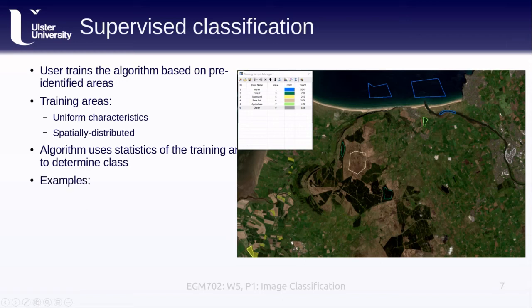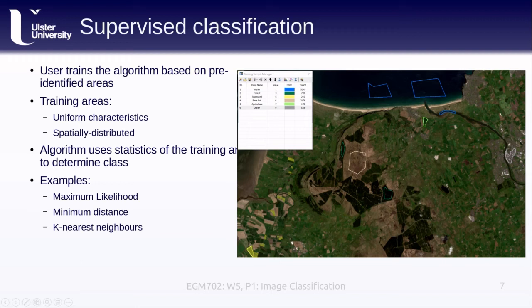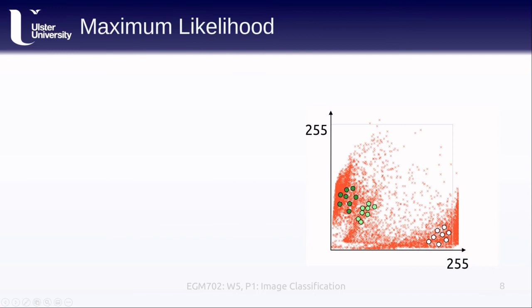Some different algorithm examples include maximum likelihood, as used in EGM 713; minimum distance, which calculates the geometric center of each class based on the training data — for each pixel, the distance to the center of each class is calculated and the pixel is assigned to the closest class; k-nearest-neighbors, which takes the k-closest training pixels to each pixel and assigns it to the majority class; and finally, parallelepiped, which draws a box around the training classes and assigns all pixels that fall within each box to that particular class. For most software packages that do supervised classification, such as ArcMap or ERDAS Imagine, you can look in the help menu for more information about the different algorithms available.